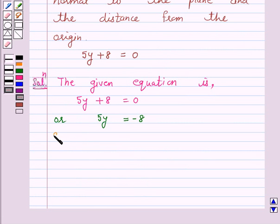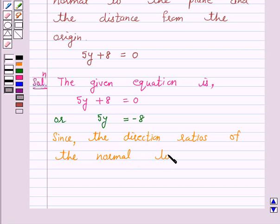Since the direction ratios of the normal to the plane are 0, 5, 0.